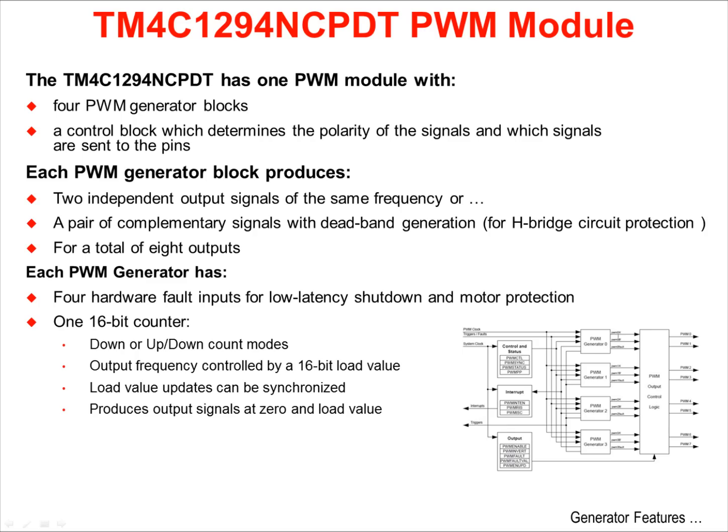The TM4C1294NCPDT Microcontroller has one PWM module. This module has four PWM generator blocks and a control block which determines the polarity of the signals and which of the signals are multiplexed to the pins. Each PWM generator produces two independent output signals of the same frequency, or a pair of complementary signals with deadband generation. Deadband generation is critical for H-bridge circuitry protection.